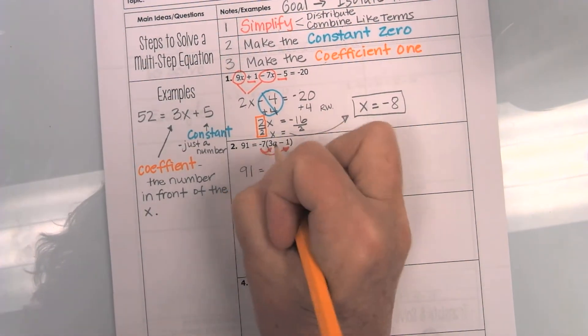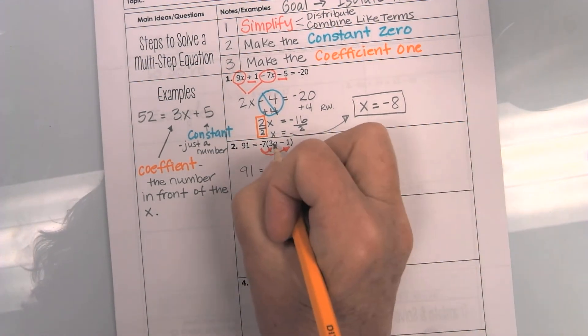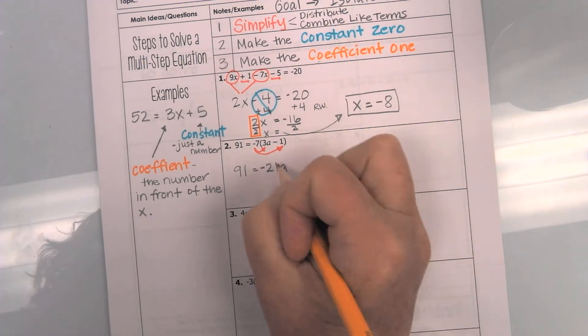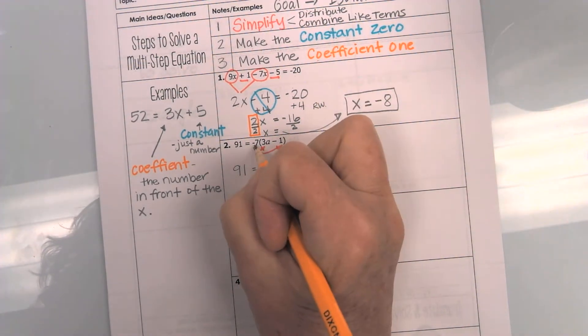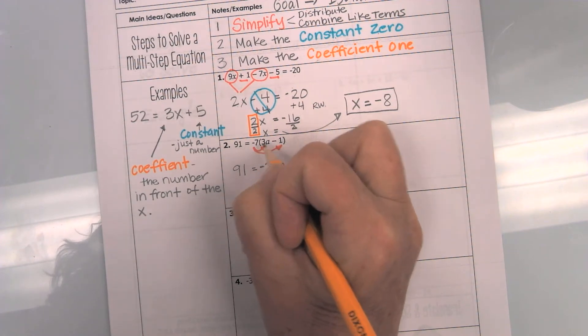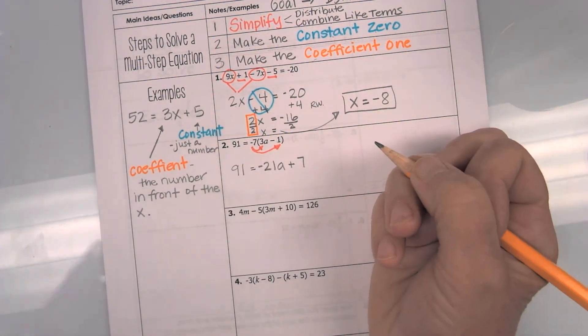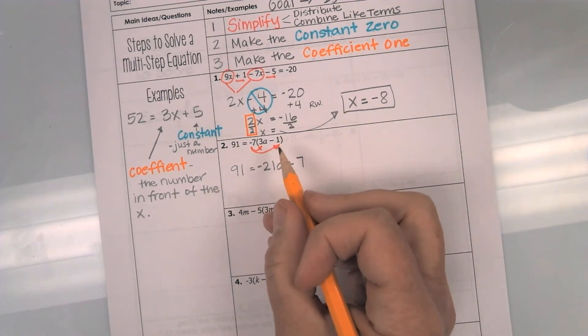But now I'm going to have a negative 7 times a positive 3 gives me a negative 21. And I have an a. Can't forget the a. Just go ahead and leave it right there at the end. Then I have negative 7 times a negative 1. Negative times negative is a positive. So, I end up with a positive 7. Okay, now that I have simplified,